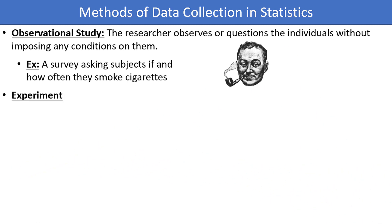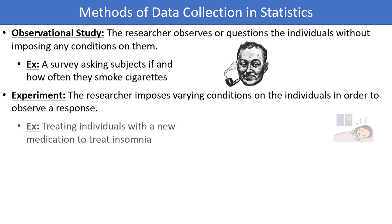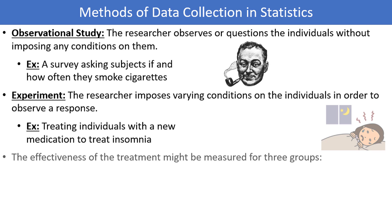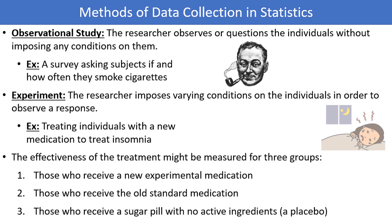In an experiment, the researcher imposes varying conditions on individuals in various groups in order to observe a response. An example could involve treating individuals with a new experimental medication to help treat insomnia or lack of sleep. Typically, experiments have at least two groups of participants that will receive differential treatment. For example, patients in the insomnia study might receive the new experimental medication, the old standard medication, or a sugar pill with no active ingredients, oftentimes called a placebo.